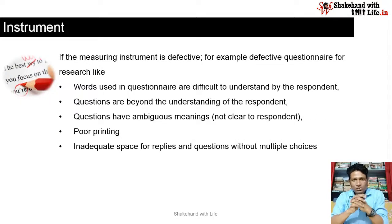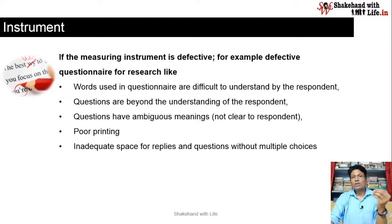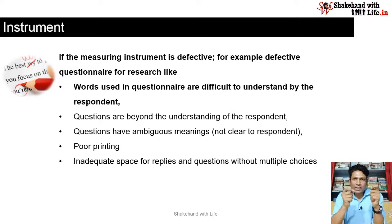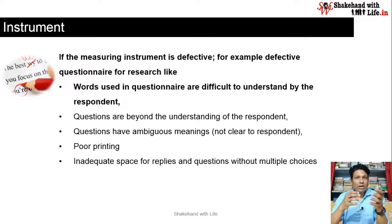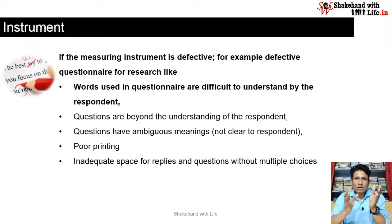Now we come to the fourth source of error in measurement, which is Instrument. If the measuring instrument is defective — like the questionnaire, where we use questions to collect answers from the respondent — then the instrument serves as a source of error in measurement. For example, if the words used in the questionnaire are difficult to understand, the respondent cannot answer correctly and introduces errors in measurement.